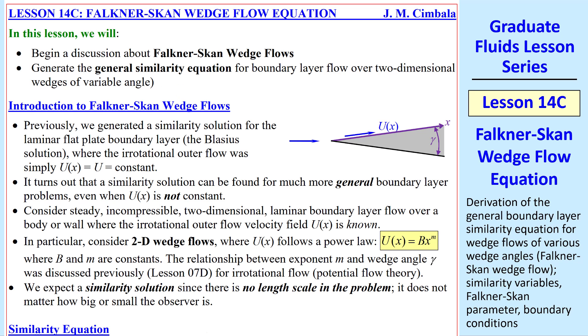By way of introduction, we solved the Blasius flat plate boundary layer, where capital U of x, the outer flow, was constant. It turns out that we can get a general solution even when U of x is not constant, but only for a certain family of capital U of x, namely when U of x is bx to the m, where b and m are constants.